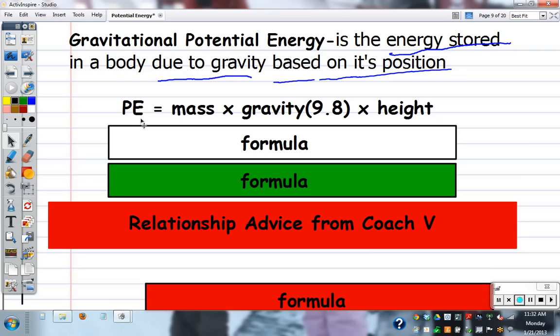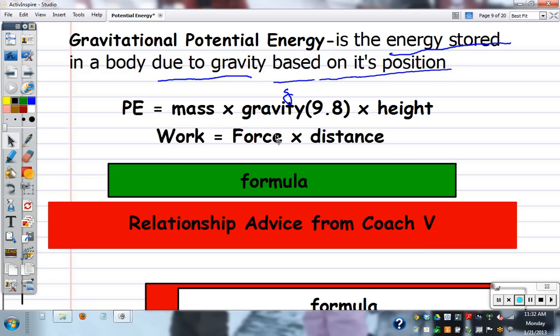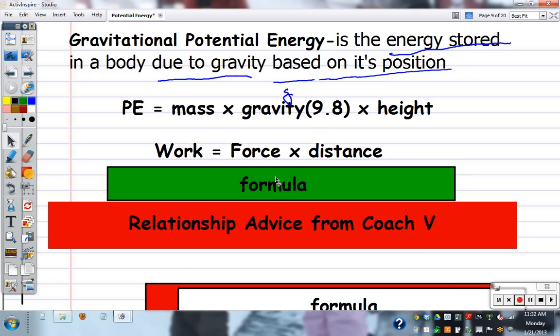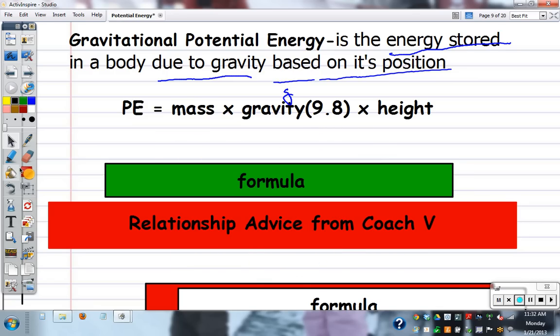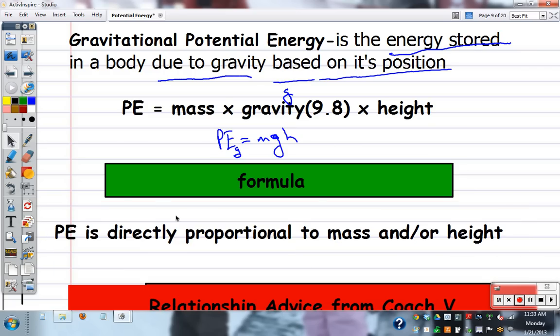So the first thing is your formula. Potential energy equals mass times gravitational acceleration, which is 9.8. We call this small g, times its height in meters. We all call this PE, potential energy. And sometimes you can give it this, gravitational equals mass times gravity times height. Gravitational acceleration. And they're directly related. If you have more mass, the object will have more energy if it falls. And if it goes higher up, it'll have more energy when it falls. So they're directly related.